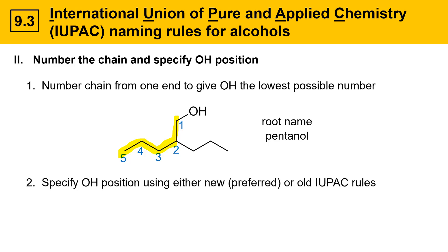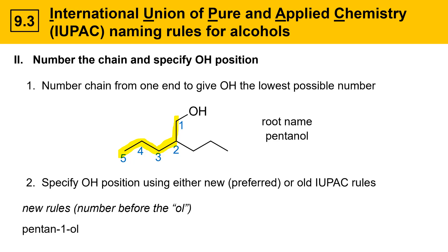There are actually two sets of IUPAC rules: a new version, which is preferred, and an older version that is still in wide use. Both are commonly seen in websites and textbooks. Under the new rules, you put the number just before the -ol suffix — for pentanol, that looks like pentan-1-ol, where the one goes between the root name and the suffix. Under the old rules, you simply put the number before the root name, so it would be 1-pentanol. Either form is acceptable.